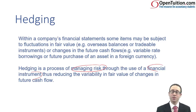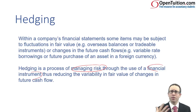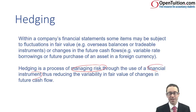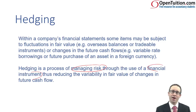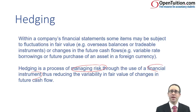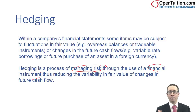Whether that's a future, whether that's an option, you could also have non-derivatives, but think about derivatives — futures, options, and also potentially a forward contract. You've touched upon forwards in some detail in F9; futures and options you've seen briefly. If you want to see them in more detail numerically, you will see them in P4. The examiner is aware of our limitations with regards to futures and options, so there wouldn't ever be anything too complicated within the exam.